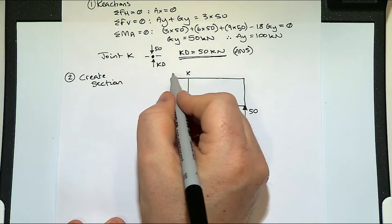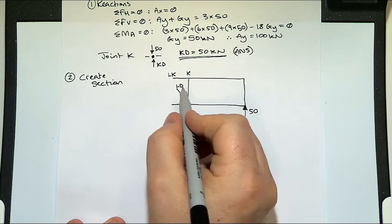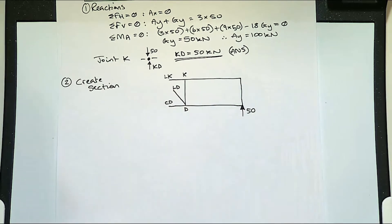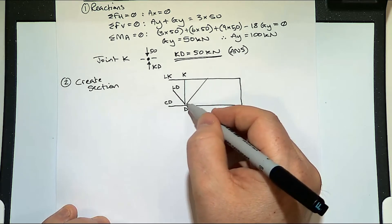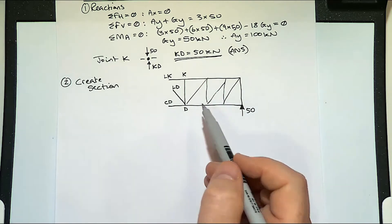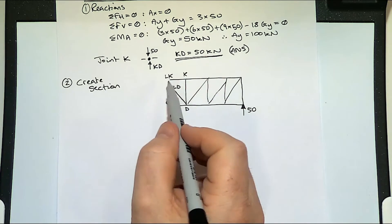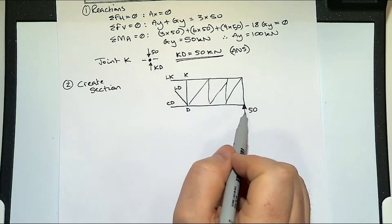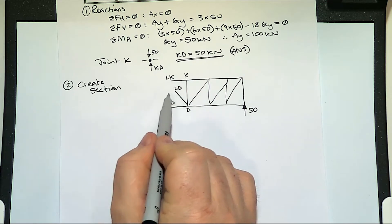So we've got our LK, I've got my LD, and my CD. I don't have to draw in these other members, because it's only when you slice through the members that you actually consider them as a force. If we slice through, the only thing that we have to consider is the external forces. So all we have is this reaction G, and then we have three members that we've cut through.